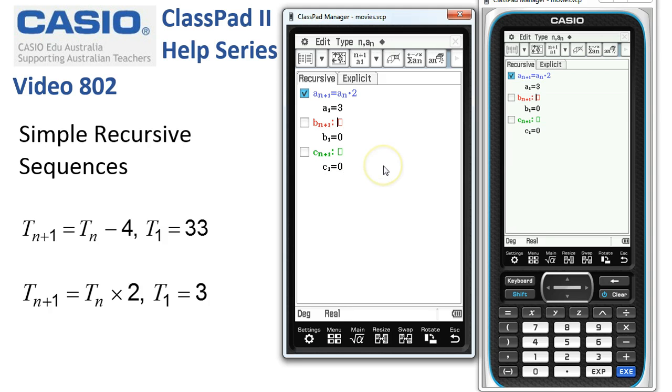Now rather than just get the sequence by itself we also want the sum of the terms of this sequence. So we're going to tap onto the diamond up here and set the sum display to on which means it'll actually create the sum of the terms of the sequence in the same window.